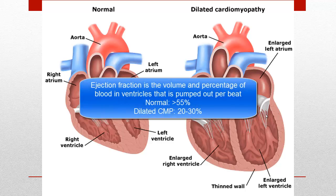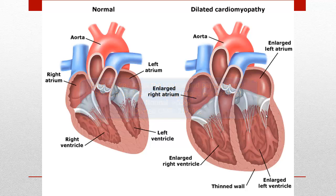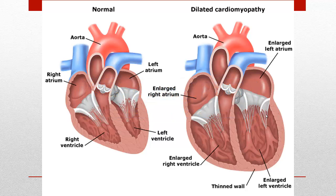One of the essential features of dilated cardiomyopathy is the lowered ejection fraction. Ejection fraction is the fraction of blood that is pumped out of the ventricles per beat, and normally the value is above 55%, but in this type of condition the value will be as low as 20 or 30%, or even lower in some severe cases.